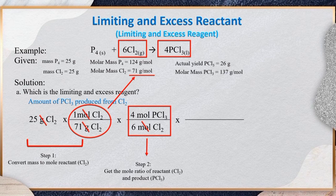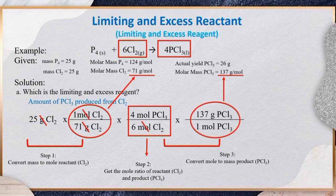Now that we have the number of moles of product PCl₃, we can proceed to the final step, which is to convert the number of moles to mass of the product PCl₃. By using the molar mass of PCl₃ as a conversion factor, we cancel mol PCl₃ by placing 1 mol PCl₃ as the denominator, and we get 32.16 g as the amount of PCl₃ produced from the reactant Cl₂.